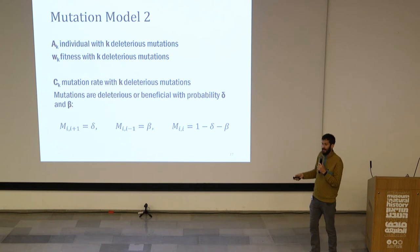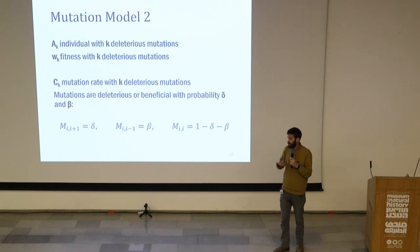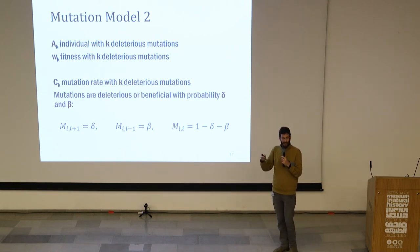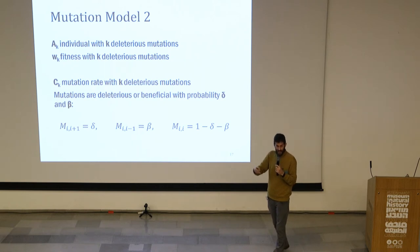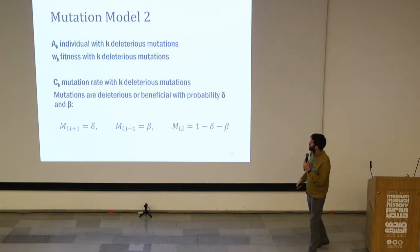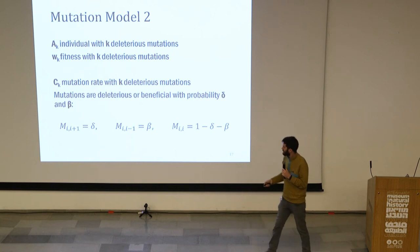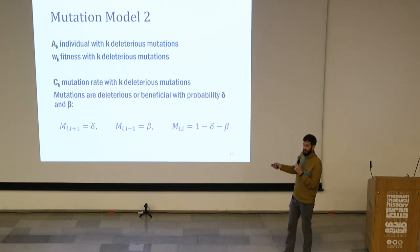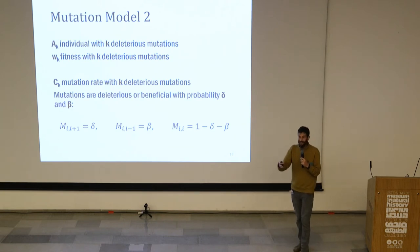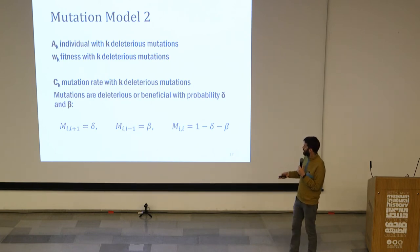Another mutation model: we can think about AK as an individual that has K deleterious mutations. Individuals accumulate deleterious mutations, which are then acted against — purged — by selection. So AK is an individual with K deleterious mutations, WK is the fitness with those mutations, CK is the mutation rate of an individual that has accumulated K deleterious mutations, and mutations can be either deleterious or beneficial, where beneficial means compensatory — fixing something the deleterious mutation broke.